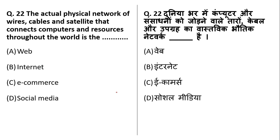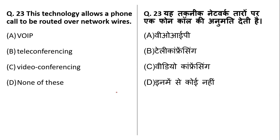The actual physical network of wires, cables, and satellites that connects computers and resources throughout the world is known as the internet. It connects computers through wires, cables, and satellites. The technology that allows a phone call to be routed over network wires is VOIP — Voice Over Internet Protocol.